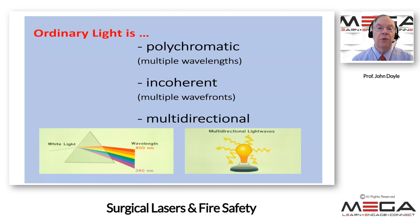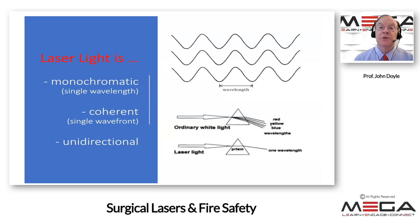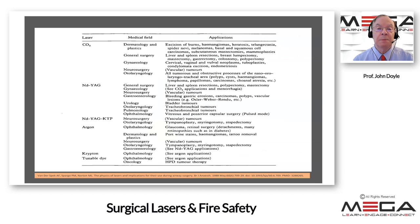Comparing ordinary light with laser light: ordinary light is polychromatic — it has multiple wavelengths — it is incoherent with multiple wavefronts, and it is multi-directional, going off in all directions. By contrast, laser light is monochromatic with a single wavelength — typically expressed in nanometers, for example 800 nm. It is coherent with a single wavefront and is unidirectional, going only in one direction.